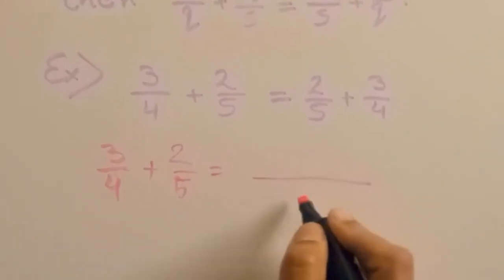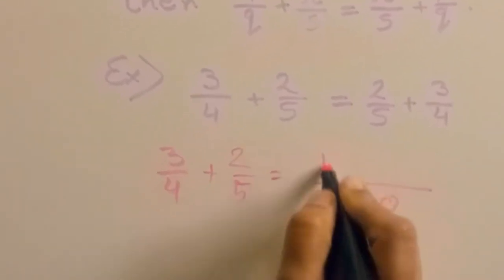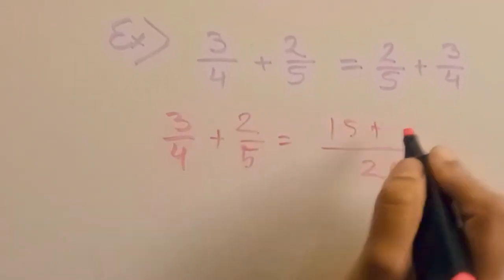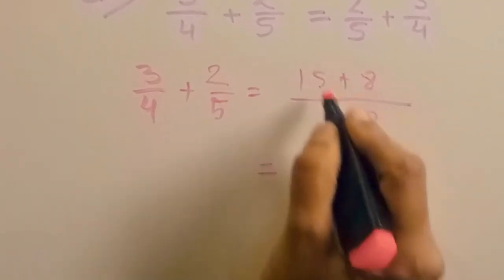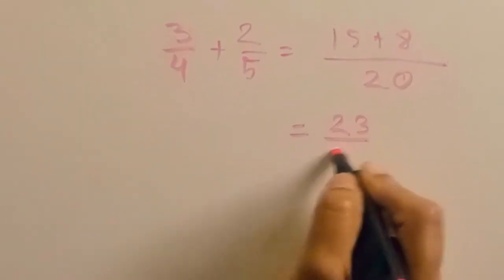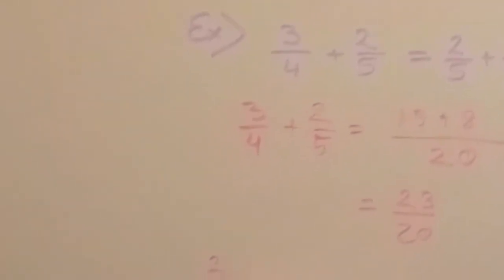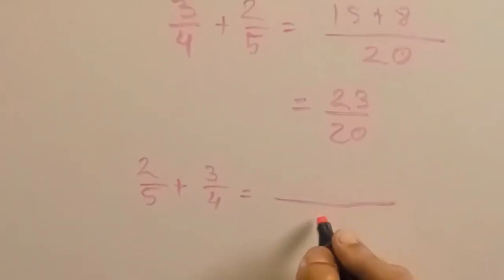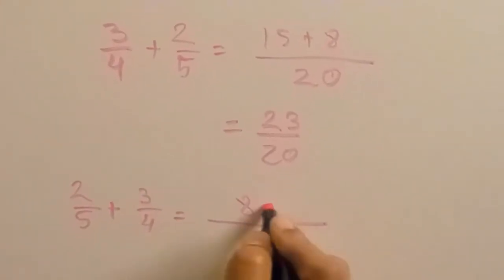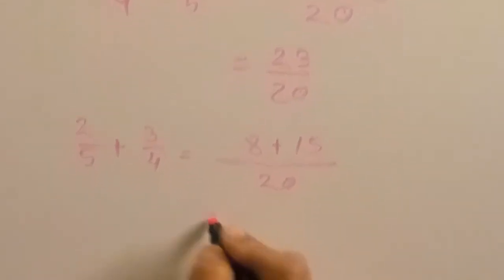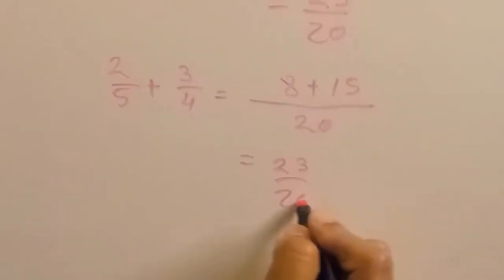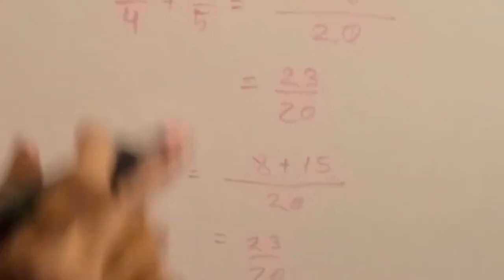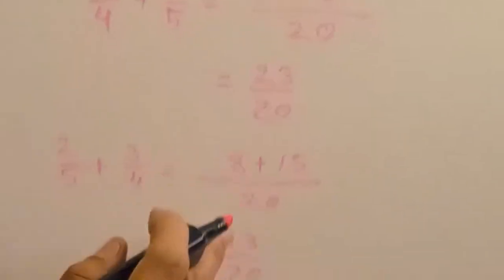For the first question, we add the left hand side first. 3 by 4 plus 2 by 5 equals: 5 fours are 20, 3 fives are 15, plus 4 twos are 8, giving 23 by 20. Now the right hand side: 2 by 5 plus 3 by 4 equals: 2 fours are 8 plus 5 threes are 15, again 23 by 20.